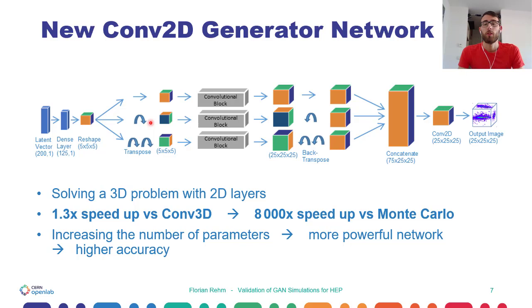And additionally, with this transition, we reached a 1.3x speedup in the inference process compared to the previous convolutional 3D model. And with this, we reached already a huge 8,000x speedup versus the Monte Carlo simulation which we aim to replace. This high number highlights the potential of GAN simulations.